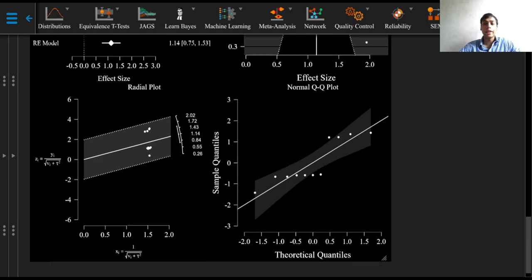And a radial version of this funnel plot is also included here. In addition, a normal QQ plot that can be used to assess departure from normality is also included. And we can see that the assumption of normality is violated here.